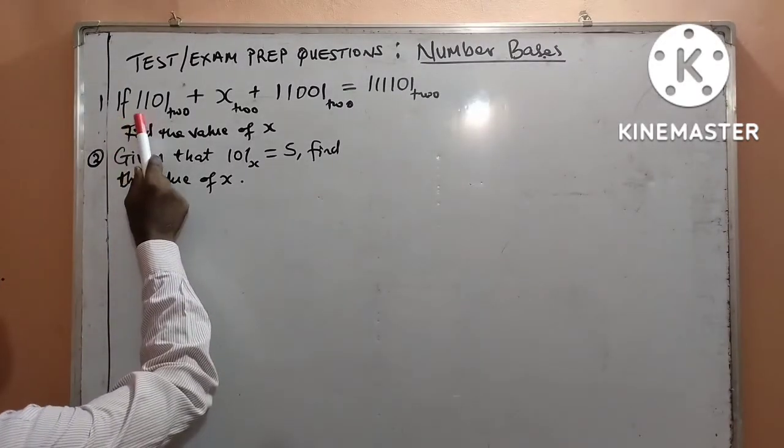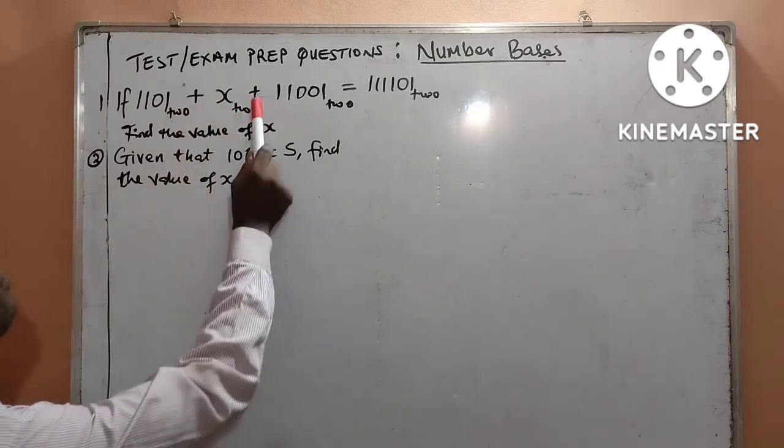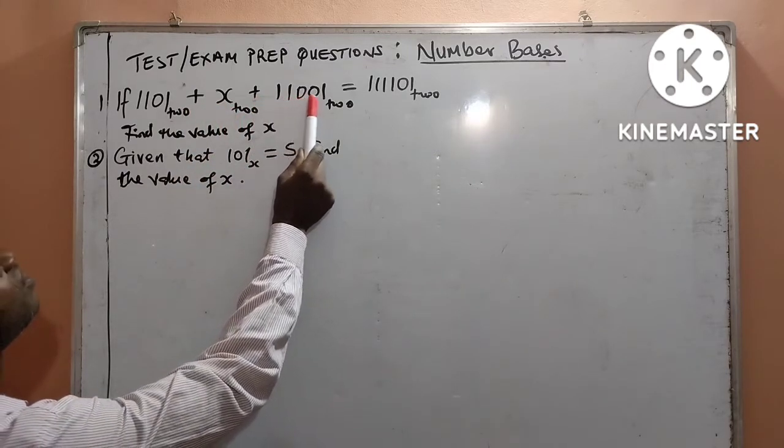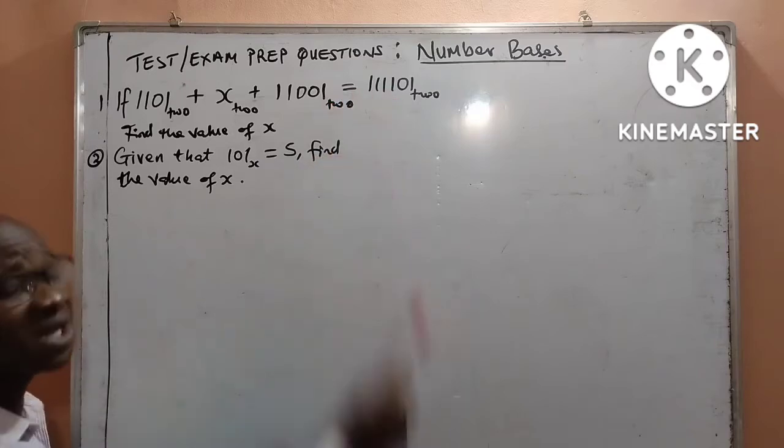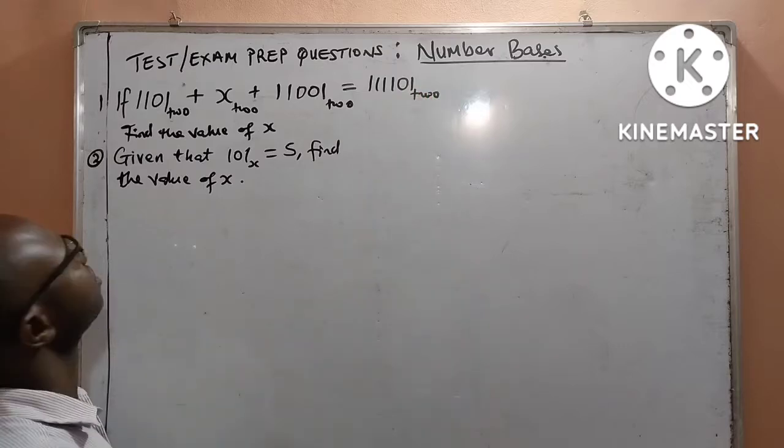Question 1. If 1101 base 2 plus x base 2 plus 11001 base 2 is equal to 111101 base 2. Then find the value of x.